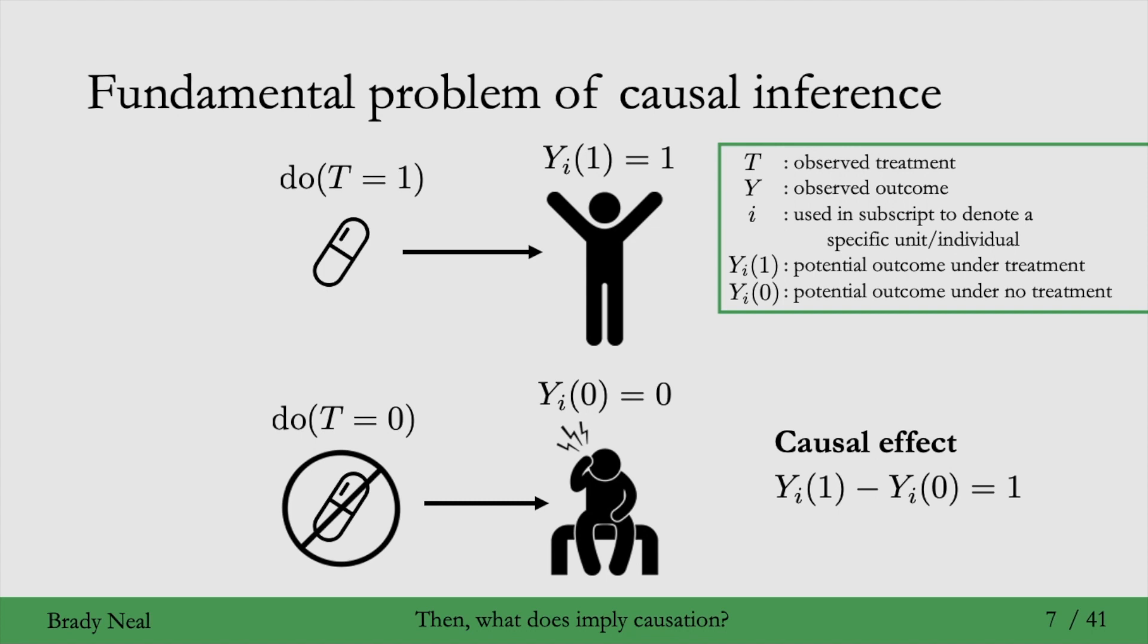To see why, consider what would happen if I were to not take the pill. I would observe YI(0) equals 0, so I would observe that my headache would not go away. But I wouldn't be able to observe my potential outcome under treatment. I wouldn't be able to observe YI(1). And that's because I can't go back in time and set conditions to exactly what they were when I didn't take the pill and then take the pill.